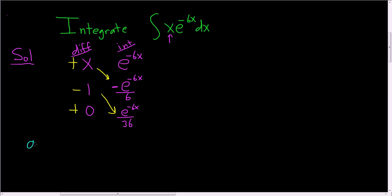The last step is to write the answer down. So the answer in this case, following the first arrow, we're going to get a negative x over 6 and then e to the negative 6x. And then following the second arrow, it's negative, so negative 1 over 36, e to the negative 6x.